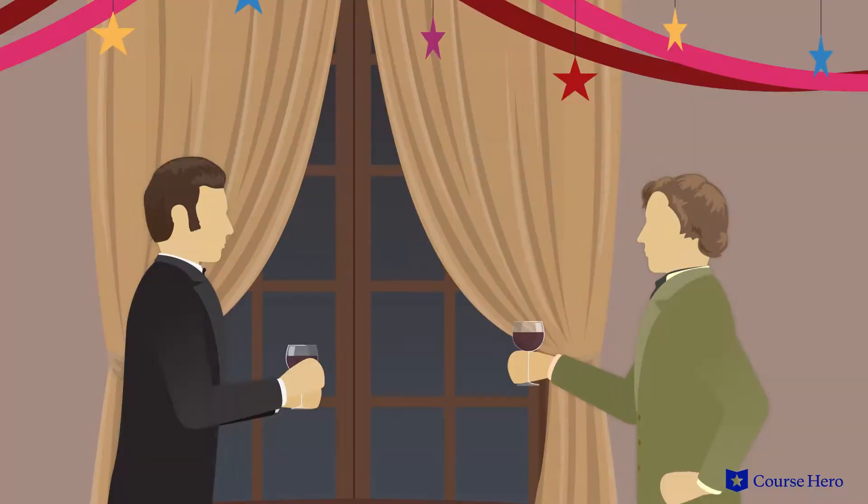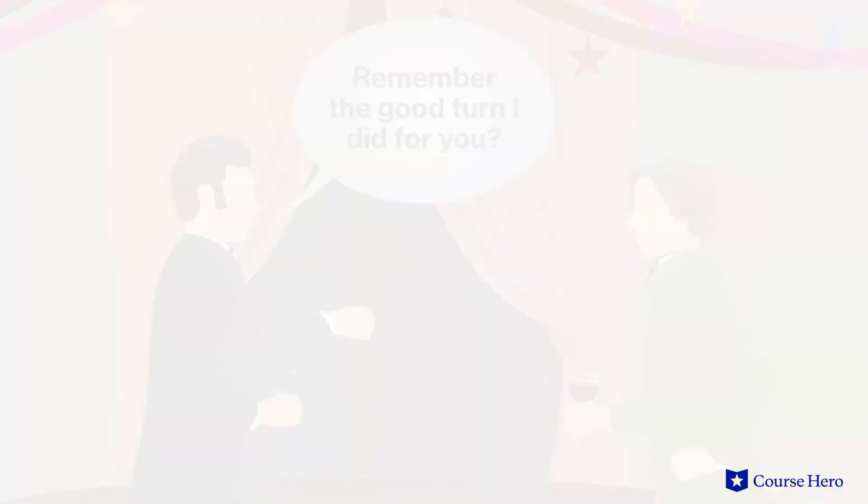Book seven of Middlemarch is called Two Temptations. In chapter 63, Mr. Fairbrother learns Lydgate is deeply in debt. He wants to offer Lydgate his support and has the opportunity at a New Year's Day party at the Vinci's. He opens the conversation by reminding Lydgate of the good turn he did for him, but this has the opposite of its intended effect as Lydgate shrinks from the notion of a quid pro quo.